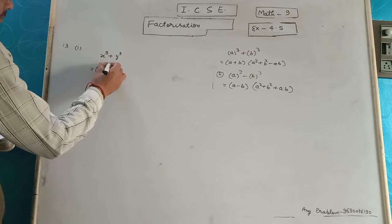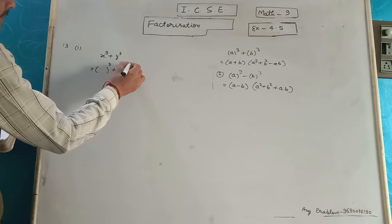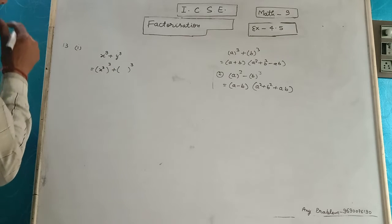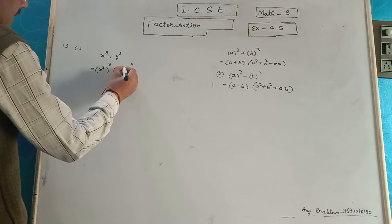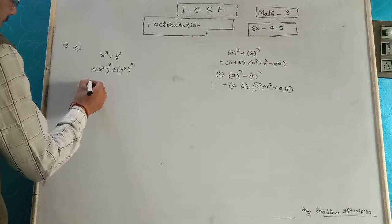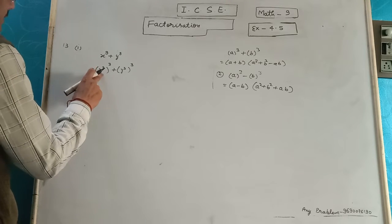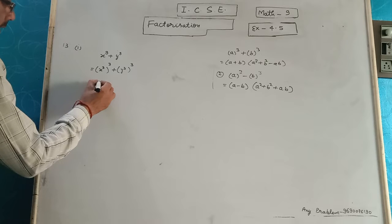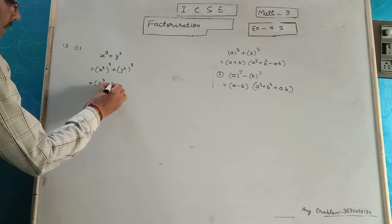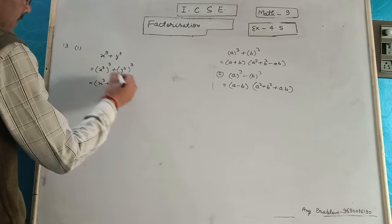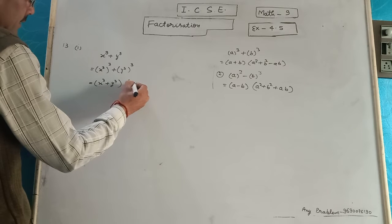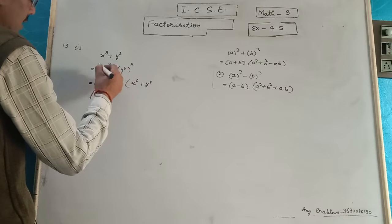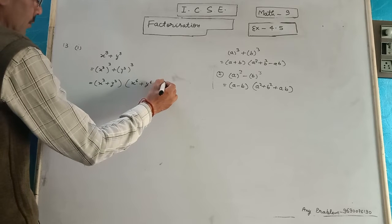Write the identity. x cube is in the first small bracket, and y cube is in the 2nd bracket. According to the identity, a cube plus b cube — here x cube plus y cube will be a and b. Square of the 1st term is x to the power 6, y to the power 6, and multiply x cube into y cube.